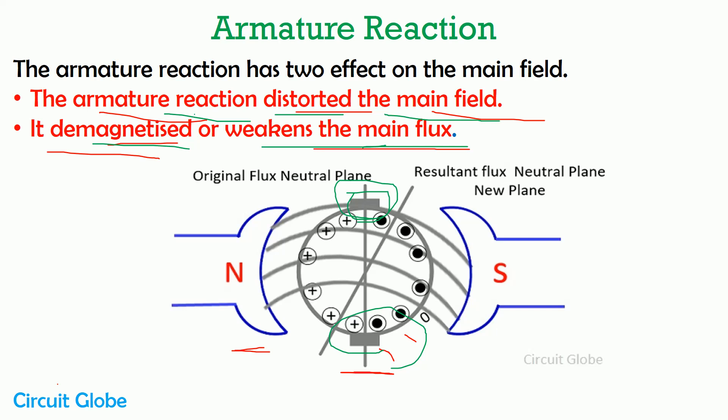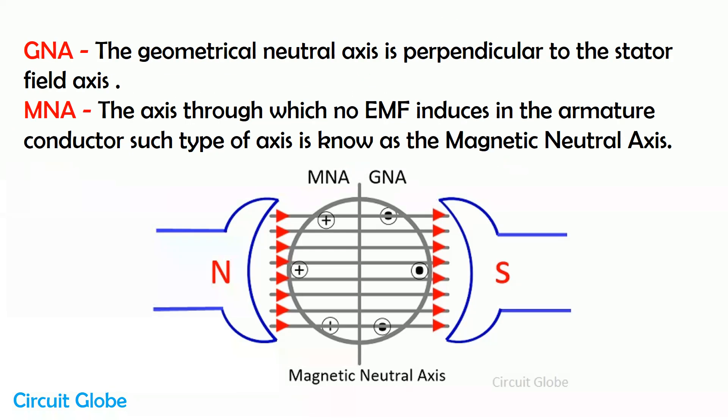These are the adverse effects of armature reaction on the DC generator, and hence it is very essential to reduce their effect on the machines. Before knowing more about the topic, first understand what is the geometrical neutral axis and what is the magnetic neutral axis.